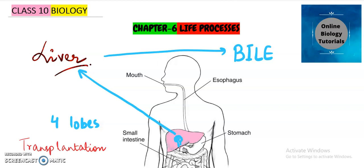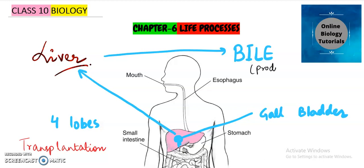Along with the liver, there is a small part close to it known as the gallbladder. Both are in close proximity, so we are discussing them together. Bile is produced by the liver, but it is stored and concentrated in the gallbladder.